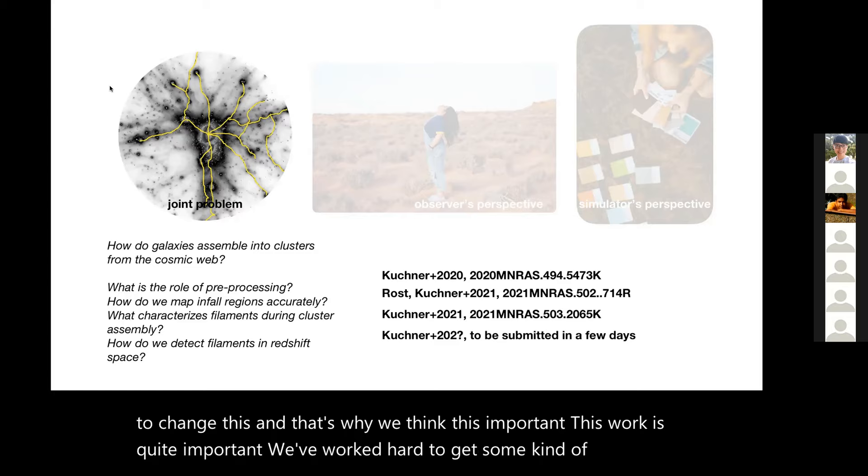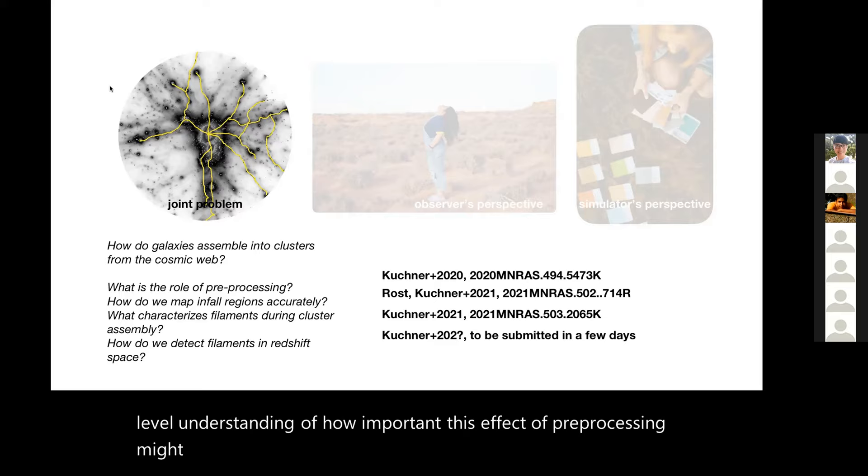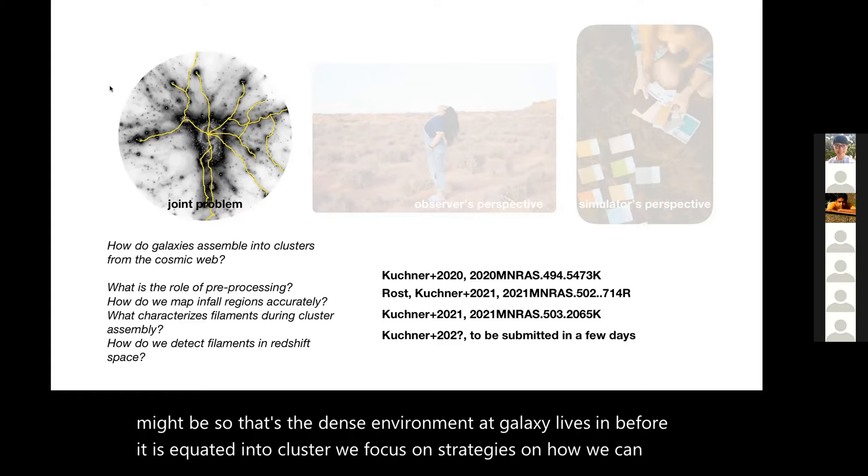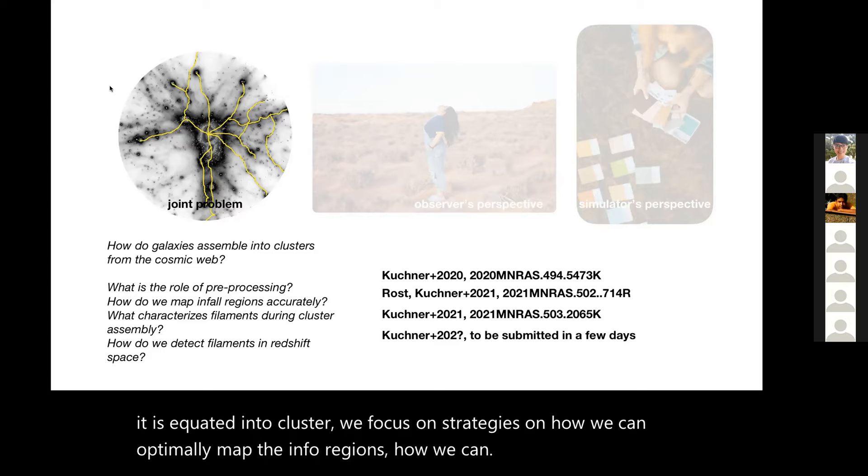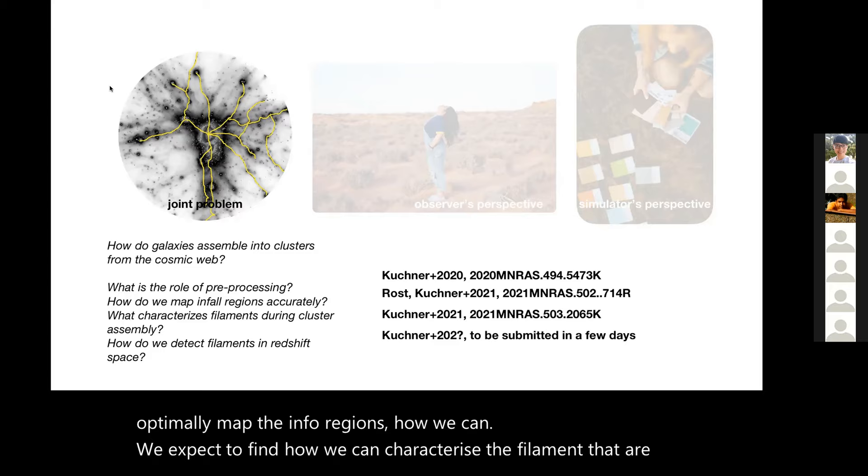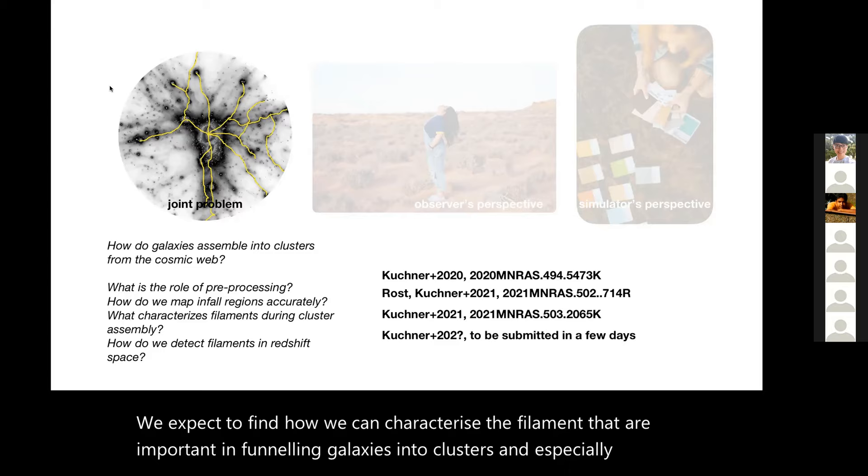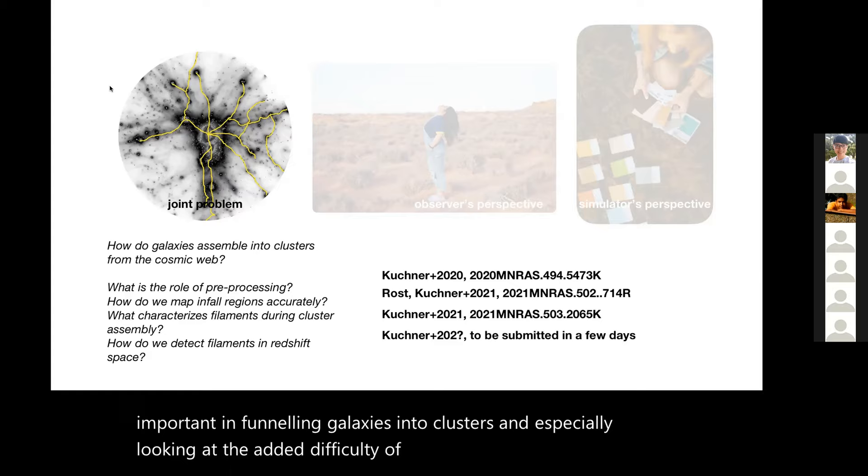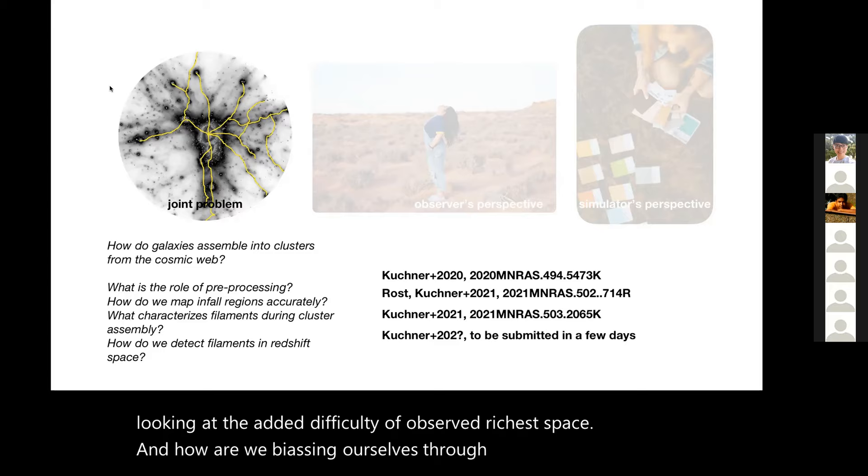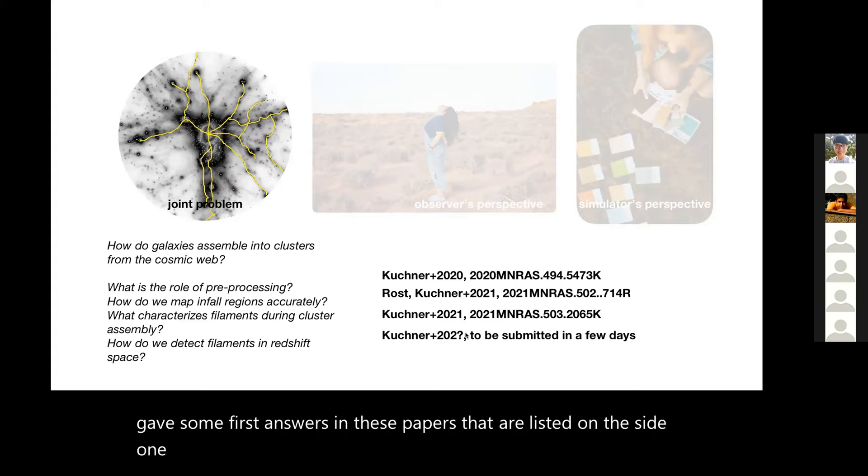Many current and upcoming programs are setting out to change this, and that's why we think this work is quite important. We've worked hard to get some higher level understanding of how important this effect of pre-processing might be - the dense environment a galaxy lives in before it is accreted into a cluster. We focus on strategies on how we can optimally map the infall regions, what we expect to find, how we can characterize the filaments that funnel galaxies into clusters, especially looking at the added difficulty of observed redshift space and how we bias ourselves through observations.